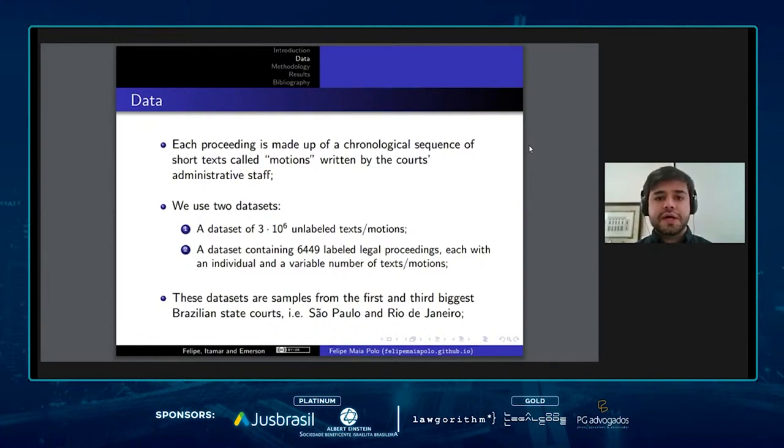And the second data set contains around 6,500 labeled legal proceedings, each with an individual and variable number of texts. These data sets are a sample from the first and third biggest Brazilian state courts, São Paulo and Rio de Janeiro.